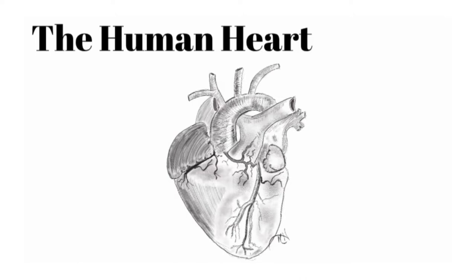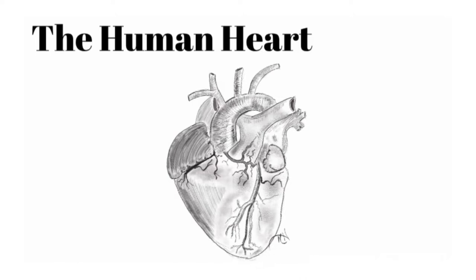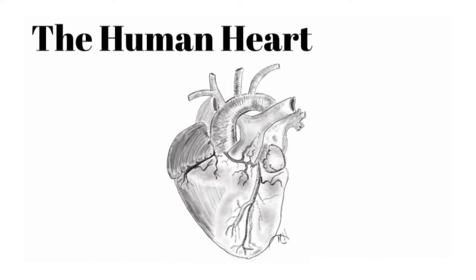Here we have the human heart. One thing I want to point out in this image that is inaccurate is the apex, which is the most inferior aspect of the human heart. Truthfully, that should be over to the left. In standard anatomical position, the apex of the heart is pointed to the left lateral aspect of the human body. If you get the opportunity to look at a human cadaver, you'll clearly see that. The fact that the apex is pointed directly inferior in this drawing is somewhat misleading.